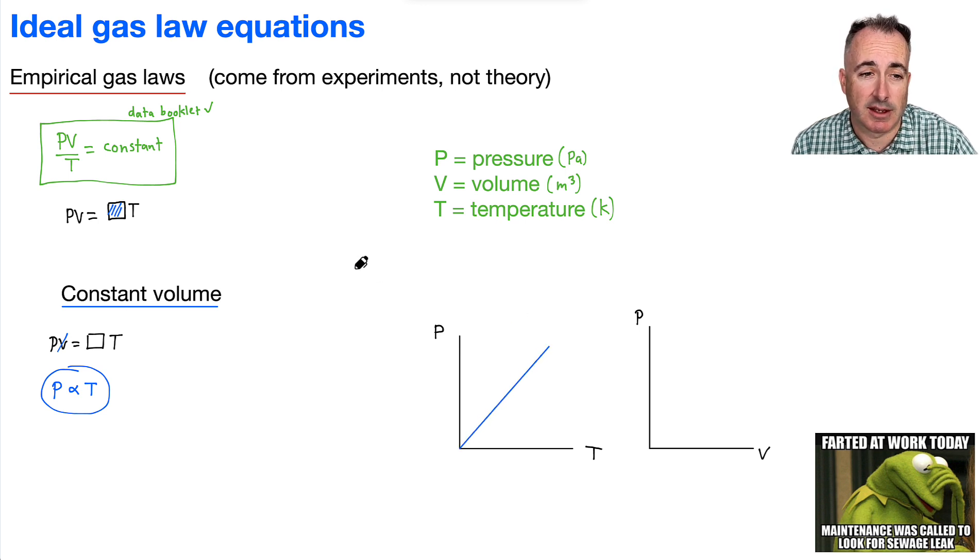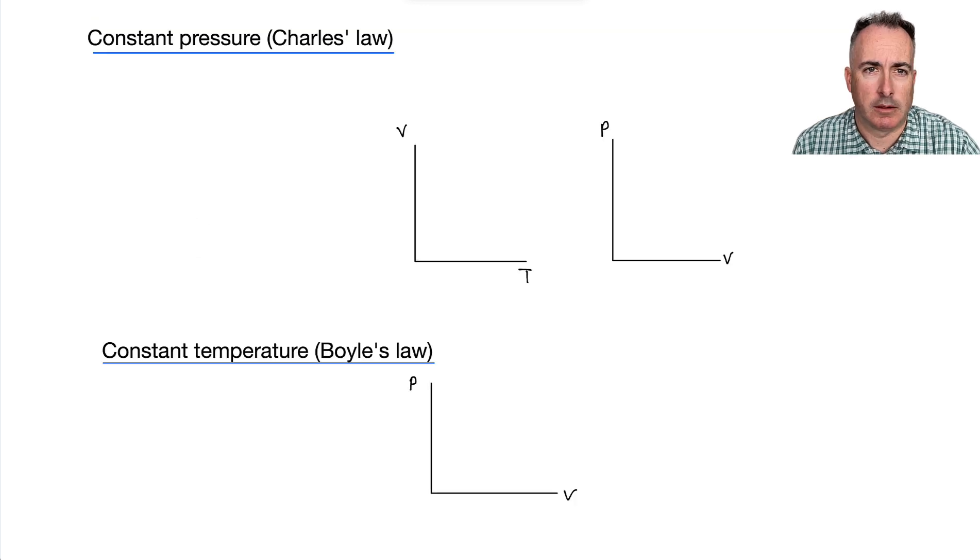Now, what does it mean if we have a P versus V graph? Well, remember, if the volume is constant, that must mean that this value right here must be constant. So maybe that would be some sort of graph that goes maybe like straight down, for example, something like that, because that would be a constant volume. There we go, that's a constant volume.